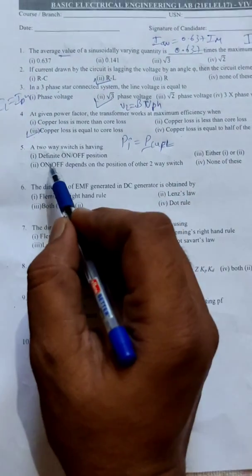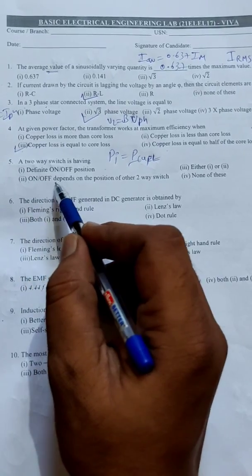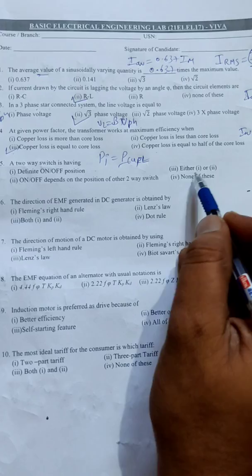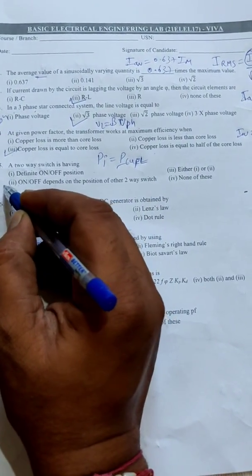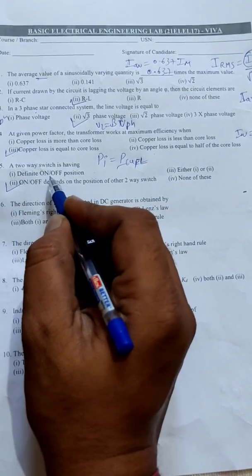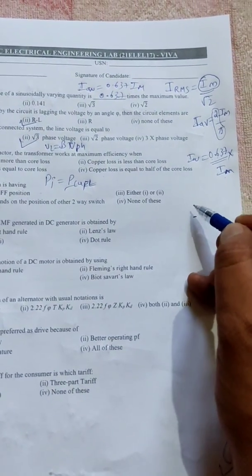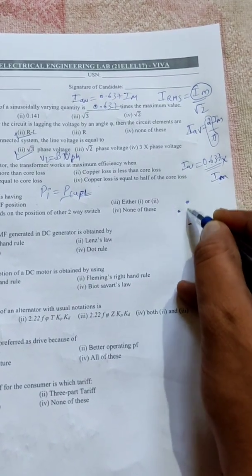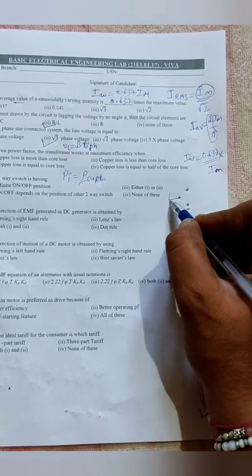Next, a two-way switch is having definite on and off position? Second one, on or off depends on position of other two-way switch? Either one or two? None of this? The correct option is second one. See, a two-way switch is having definite on and off position? No, no, because the switch is connected to a live wire only.